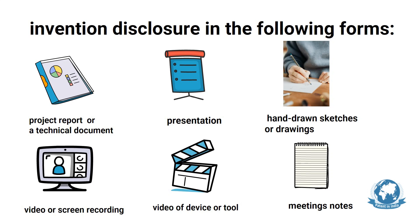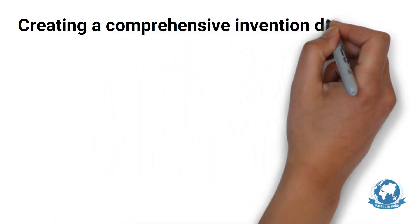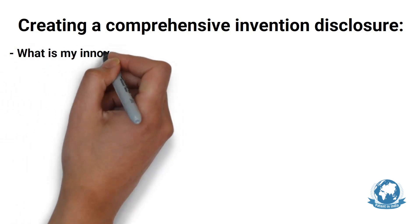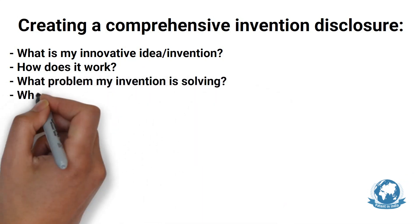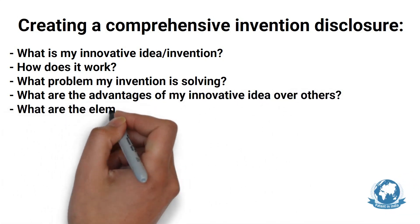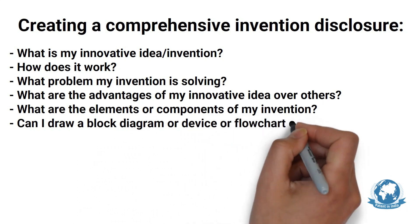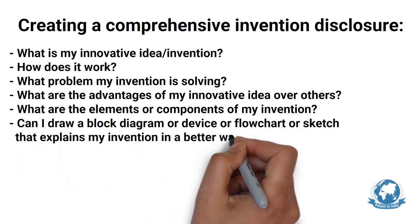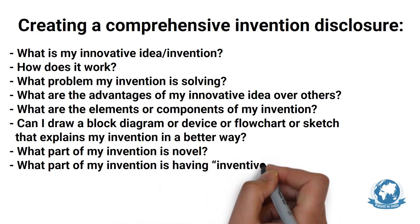Any other relevant form in which information about the invention is communicated to a patent agent or attorney is acceptable. The form of information can be varied as per your preference. However, there are a few things to consider while creating a comprehensive invention disclosure: What is my innovative idea or invention? How does it work? What problem does my invention solve? What are the advantages over others? What are the elements or components and how do they function? Can I draw a block diagram, flowchart, or sketch? What part of my invention is novel, and what part has inventive step?